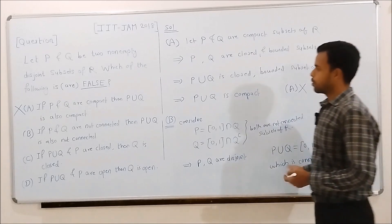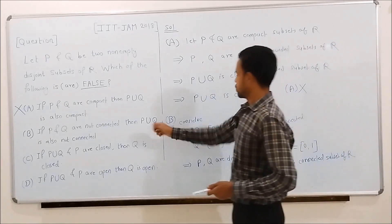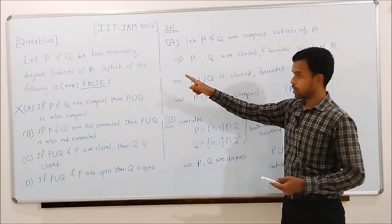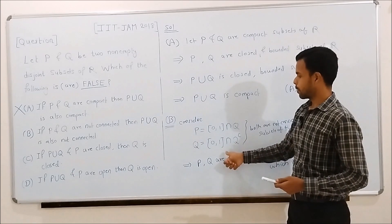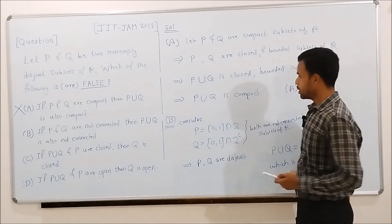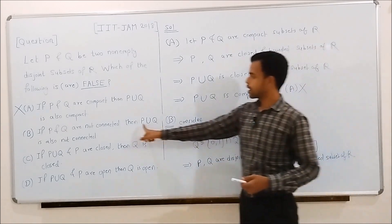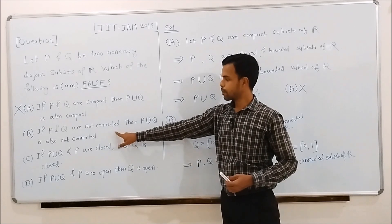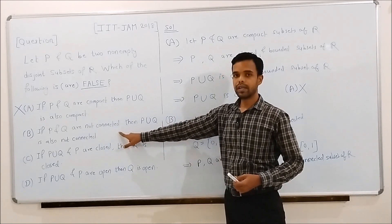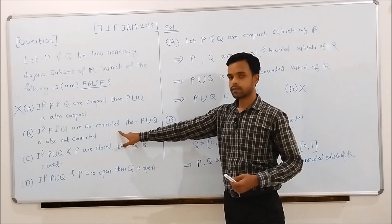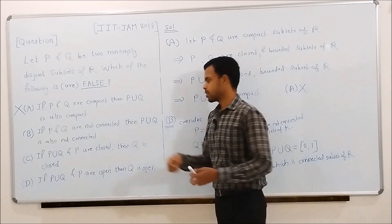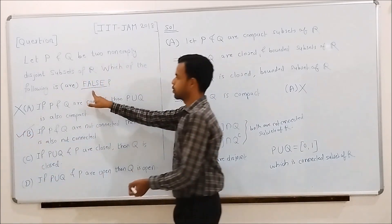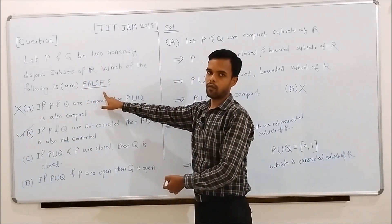Thus, we have found two non-connected disjoint subsets of R whose union is a connected subset of R. So the statement in option B is false, and we have to select it because we must select only those options which are false.